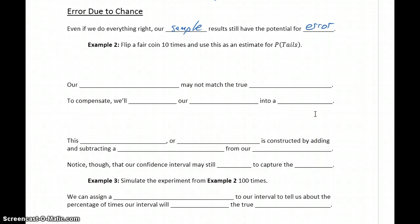In Example 2, we want to flip a fair coin 10 times and use this to estimate the probability of getting tails. So we know that every time we flip a coin, we have a 50-50 chance of getting heads or tails. So if we flip a coin 10 times, we should get tails 5 times.